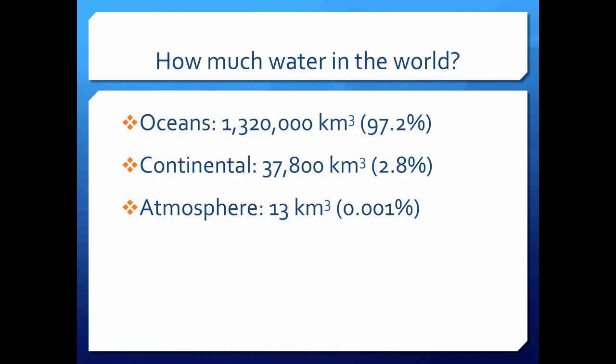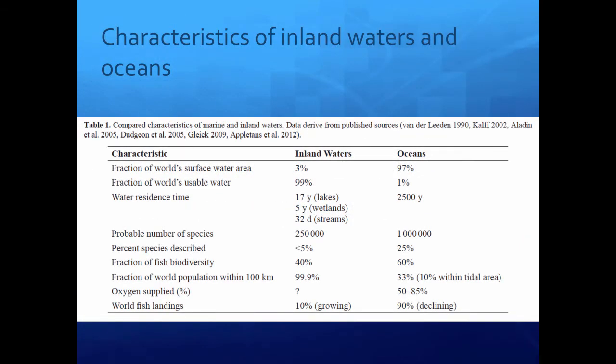In total there's about 1.3 million cubic kilometers of water — a cubic kilometer being 1,000 meters on a side. Continental water is about 40,000 cubic kilometers, or 2.8 percent of the overall amount, and atmospheric water is a puny 13 cubic kilometers, or about 0.001 percent. I'm not saying marine waters aren't important — they're very important — but I'd like to contrast inland waters with what you may know about oceans.